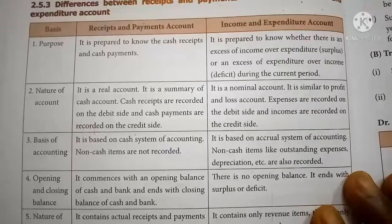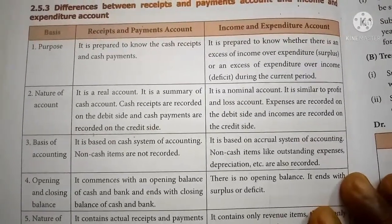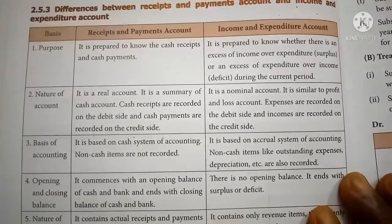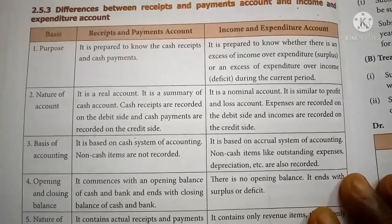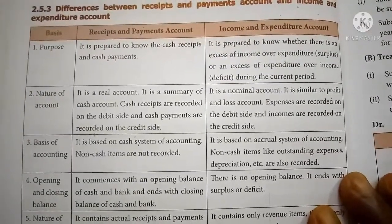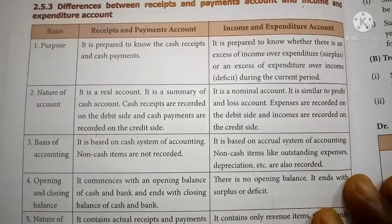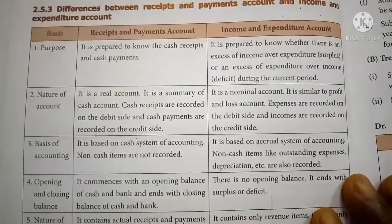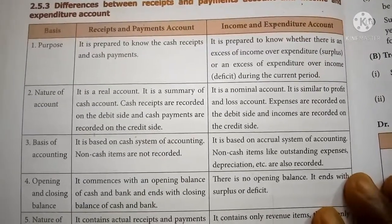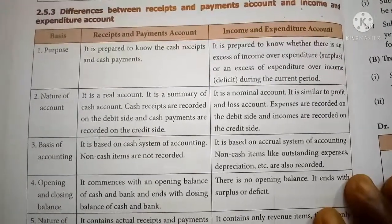the Income and Expenditure account is a nominal account and is similar to the Profit and Loss account. Expenses are recorded on the debit side and income is recorded on the credit side. The result — surplus or deficit — arises while balancing the Income and Expenditure account.